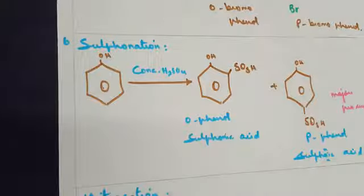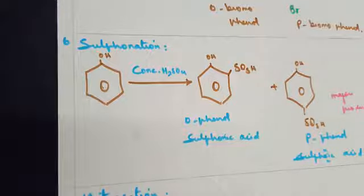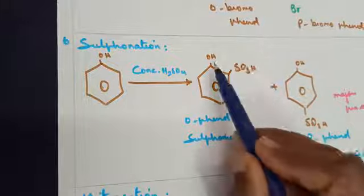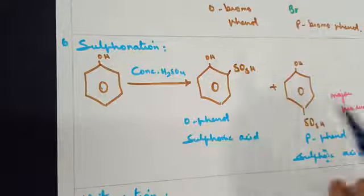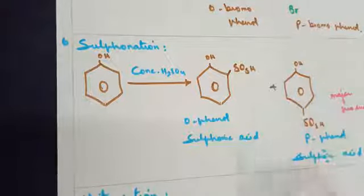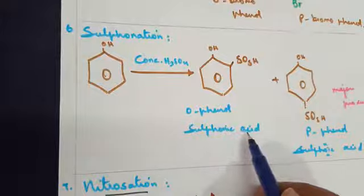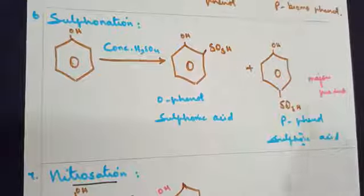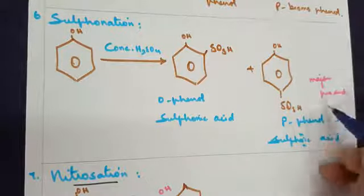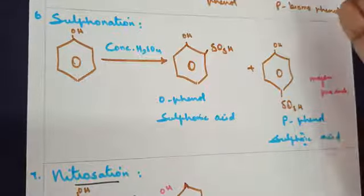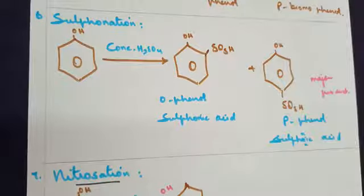The next reaction is sulfonation. When phenol is treated with concentrated H2SO4, you get a sulfonic acid group. The phenol ring remains as is, and the SO3H group goes to the ortho and para positions, giving ortho-phenolsulfonic acid and para-phenolsulfonic acid. The para position gives the major product, because the para position is symmetrical to the existing functional group.